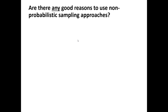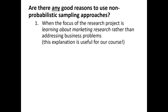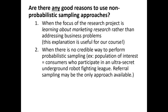Are there any good reasons to use non-probabilistic sampling approaches? One is when the focus of the research project is more about learning how marketing research works rather than addressing business problems — a useful defense for our course, since we are in fact going to be using convenience sampling for our projects. Another answer is when there is no credible way to perform probabilistic sampling. As with referral or snowball sampling, sometimes it's impossible to go about it in a probabilistic way, and when those tools aren't available, it may be defensible despite its limitations.